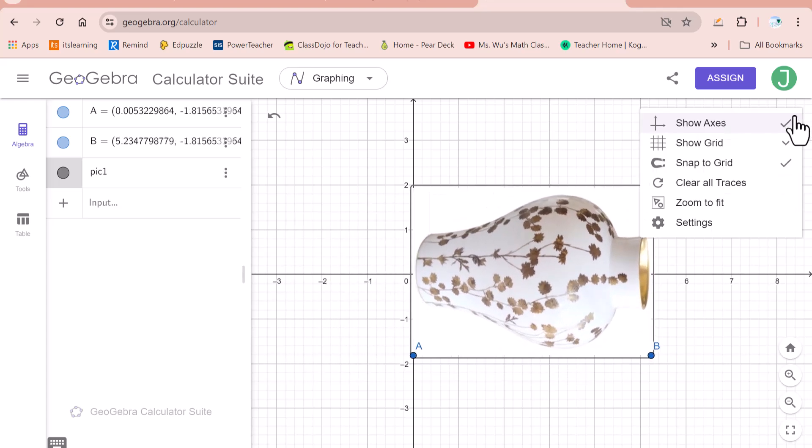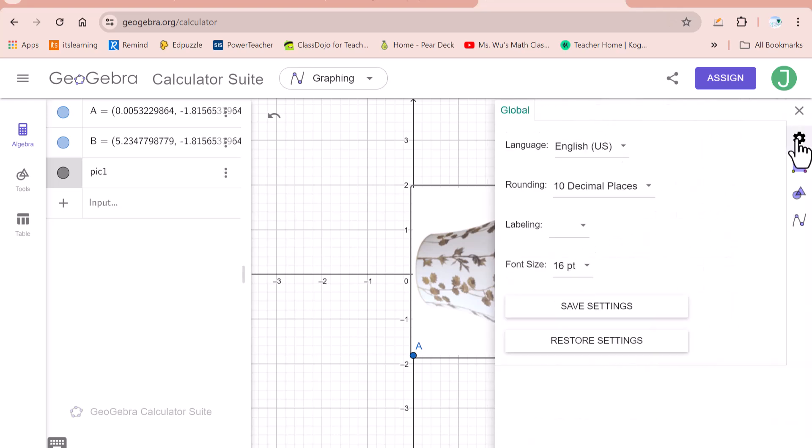Click on this setting. Click here. Make sure rounding is 10 decimal places. Then click save the settings.